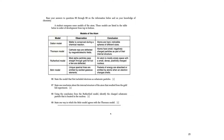State one conclusion about the internal structure of the atom that resulted from the gold foil experiment. You can say either of the two things: the atom is mostly empty space, or it has a dense positively charged nucleus. Question 68: using the conclusion from the Rutherford model, identify the charged subatomic particle located in the nucleus — that's the proton.